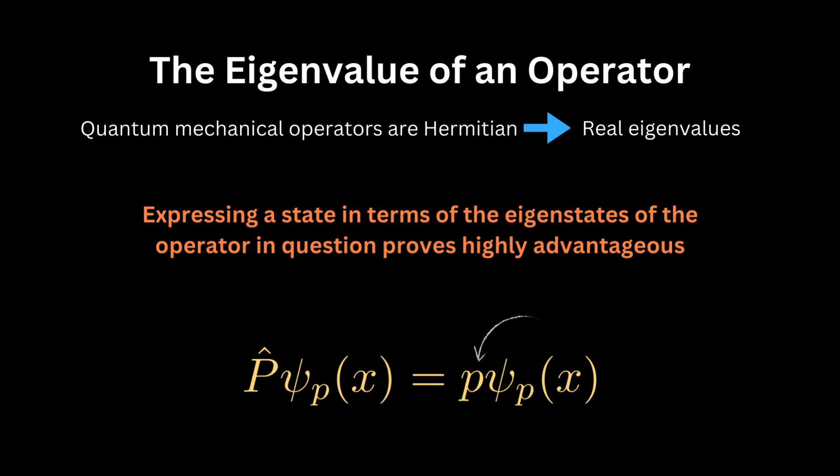P is called the eigenvalue of the operator. An eigenvalue is always a real number, since it theoretically represents the result of a unique measurement.